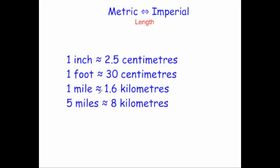And five miles is approximately equal to 8 kilometers. If you times the third line — one mile is approximately equal to 1.6 kilometers — by five, you get five miles approximately equal to 8 kilometers. This one's quite useful because both numbers are integers, they're whole numbers. But I actually tend to use the one above myself.